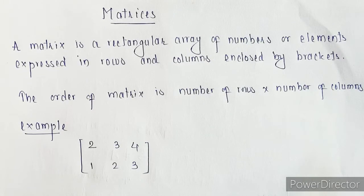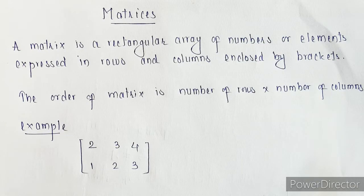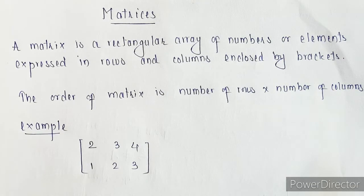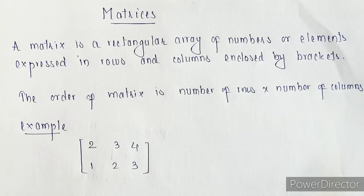We will be discussing about matrices. A matrix is just a rectangular array of numbers or elements which is expressed in rows or columns and enclosed in brackets. Basically, it is just some numbers or elements which are arranged in rows and columns and enclosed in square brackets.